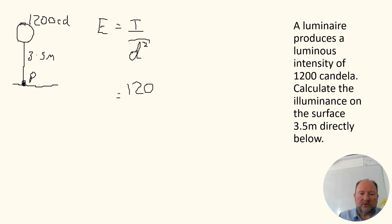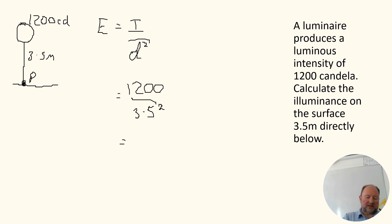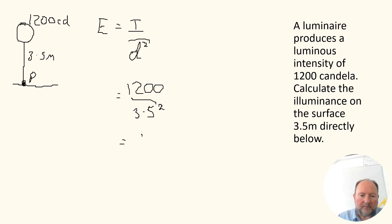So we do 1200 — because we've got 1200 candela — divided by our distance, which is 3.5, and don't forget to square that distance. It's inverse square law, so you must square the distance. Let's get the calculator out: 1200 divided by 3.5 squared. I make that 97.96 lux. Don't forget to underline your answer.